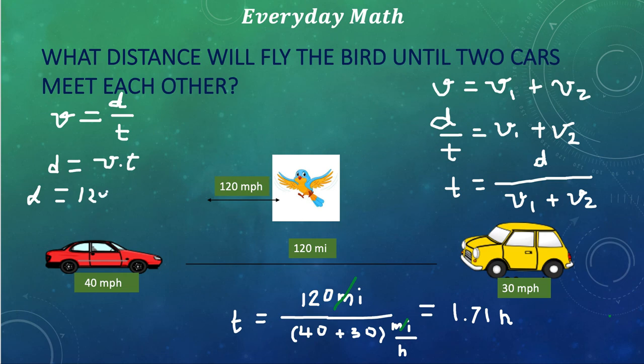120 miles per hour, and here is 1.71 hour. And now, just let me simplify units. If I simplify the units, I can simplify this unit with this unit here. And now I will find what distance is going to pass the bird until they meet each other.